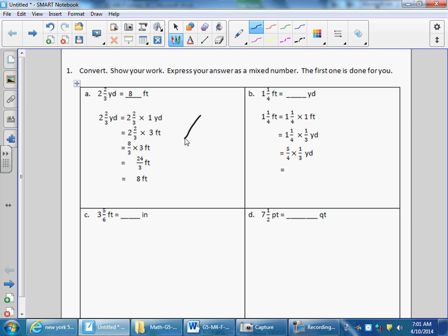Next we're gonna go to B and we're looking at one and one-fourth feet, one and a quarter feet equals how many yards. So I take that original measurement and that first step is important. I want to get organized. One and a quarter feet equals one and a quarter times one foot.